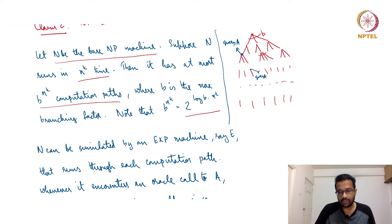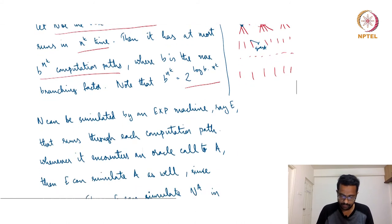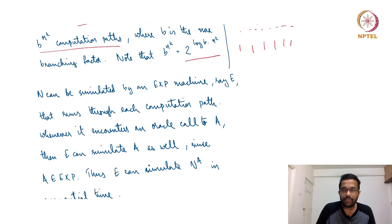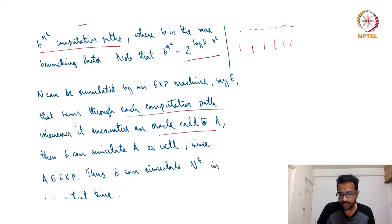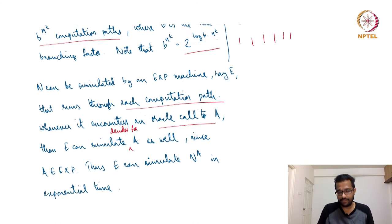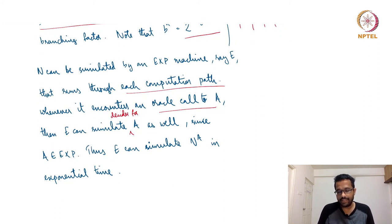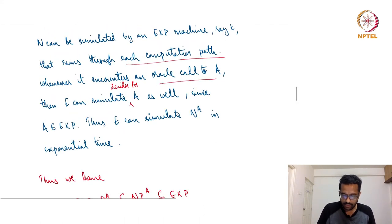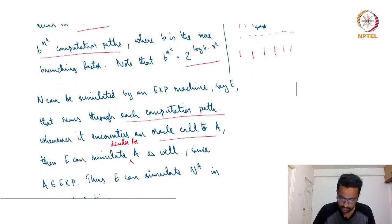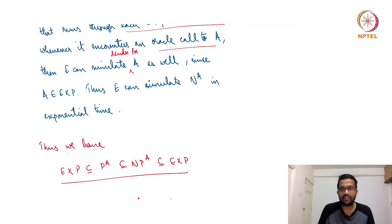The EXP-time machine runs through each path in the computation tree — there are at most exponentially many paths (2^{(log b)·n^k}). Whenever it encounters an A oracle query, it runs the EXP-time decider for A. Multiplying two exponential quantities still gives an exponential time quantity. Thus, the EXP-time machine E can simulate N^A in exponential time. An arbitrary language in NP^A is therefore contained in EXP.